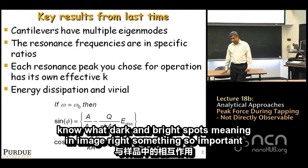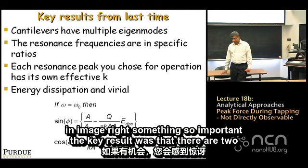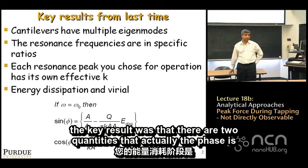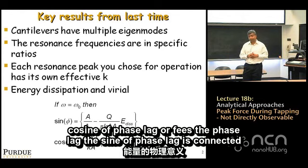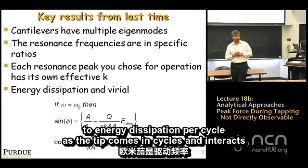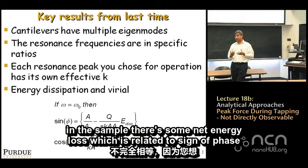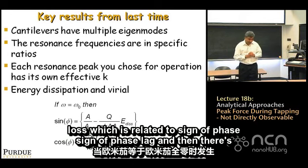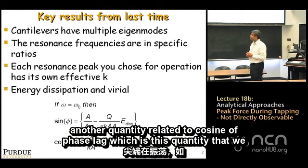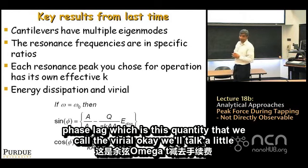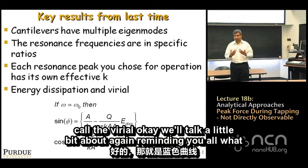This is something so important. The key result was that phase is divided into sine of phase lag and cosine of phase lag, where phi is the phase lag. The sine of phase lag is connected to energy dissipation per cycle — as the tip cycles and interacts with the sample, there is some net energy loss related to sine of phase lag.